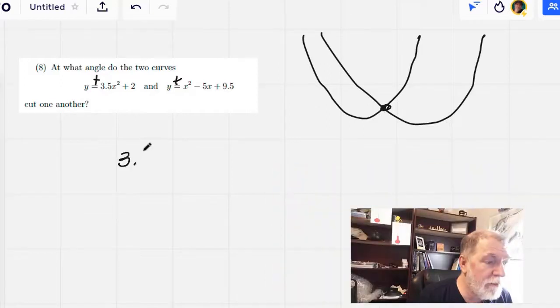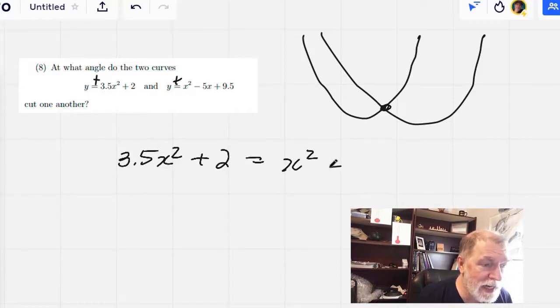So we've got 3.5x squared plus two equals x squared minus 5x plus 9.5.